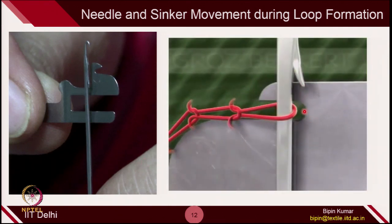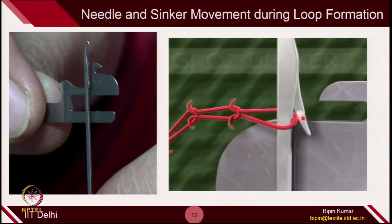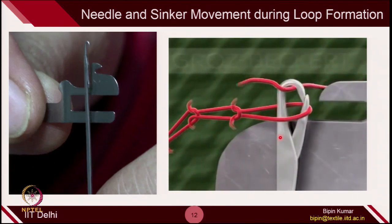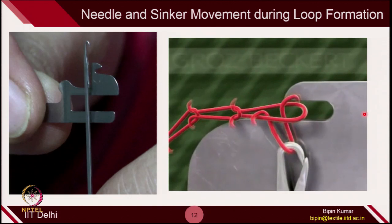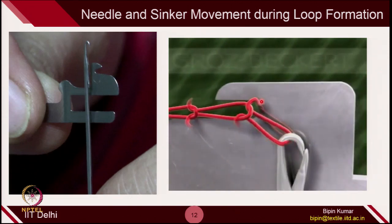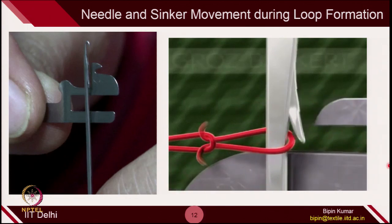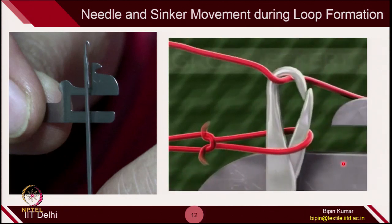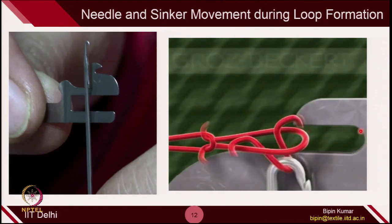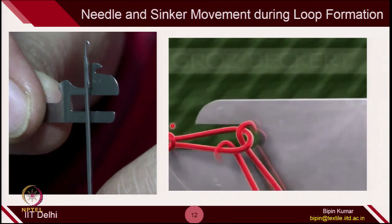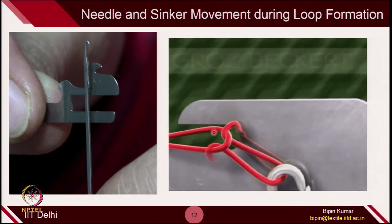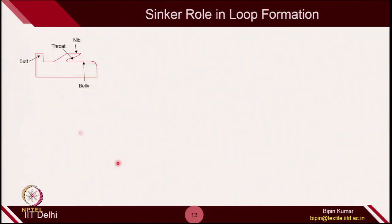Once the needle goes up, the sinker moves back and catches the yarn. Once it catches the yarn, the sinker moves forward so that it holds the loop. So once the needle goes up, sinker moves back; once it catches the yarn, sinker goes inward to catch the loop. Let's break down each of these movements and try to understand the role of each part of the sinker.